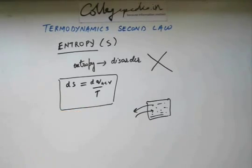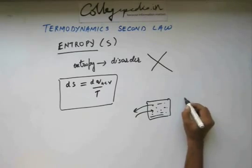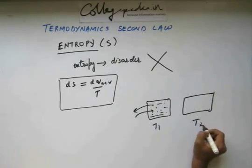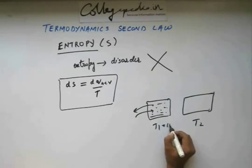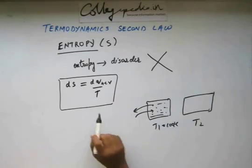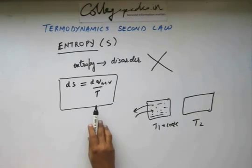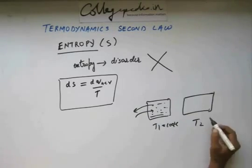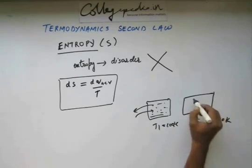Now, this entropy, change in entropy is inversely proportional to temperature. That means if your temperature is high, let's take two cases, this is at T1, this is at T2. Suppose this is at 100 Kelvin. Now, mind you, this temperature has to be in Kelvin. Don't take it in degrees Celsius. In all the formulas where T appears, you have to take SI unit. And SI unit of temperature is Kelvin.